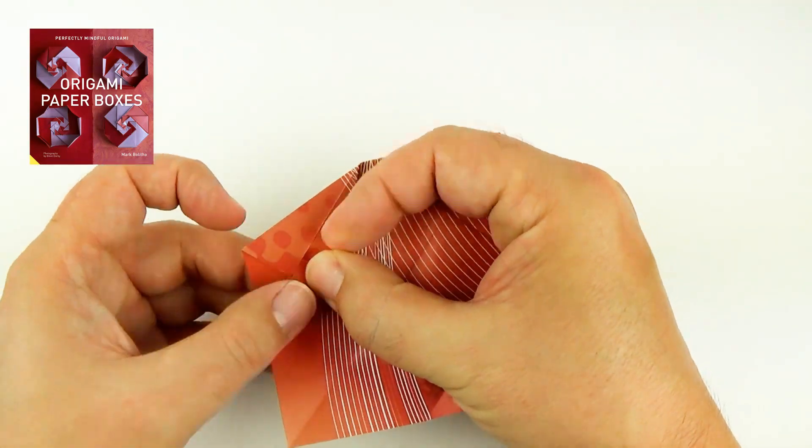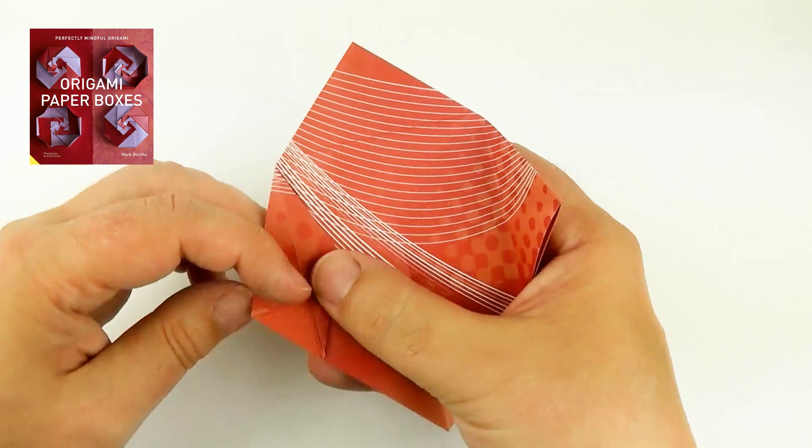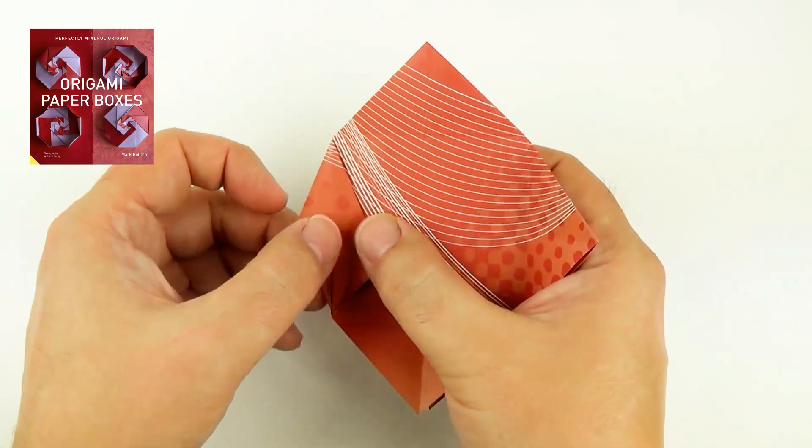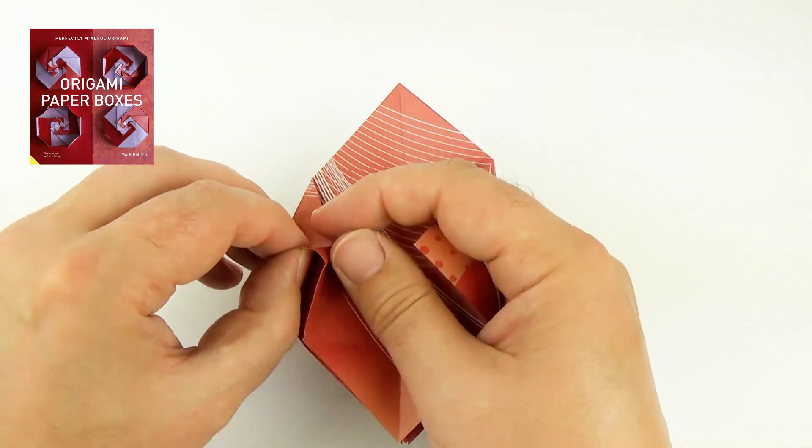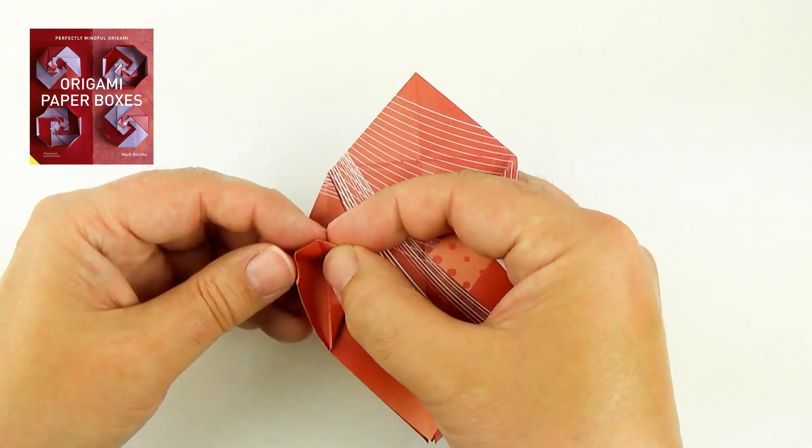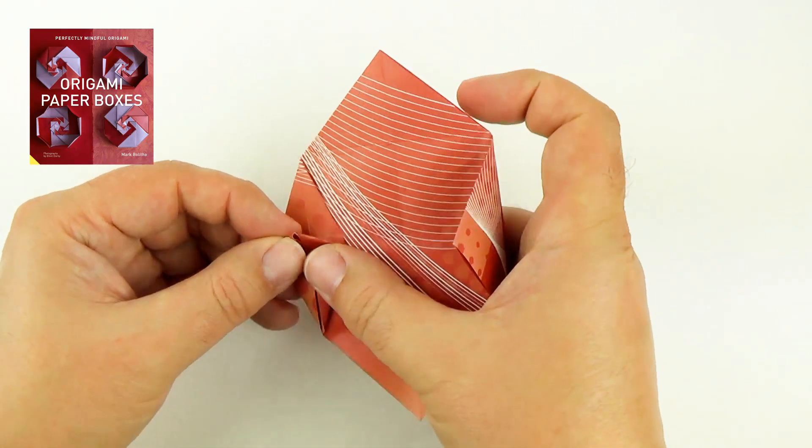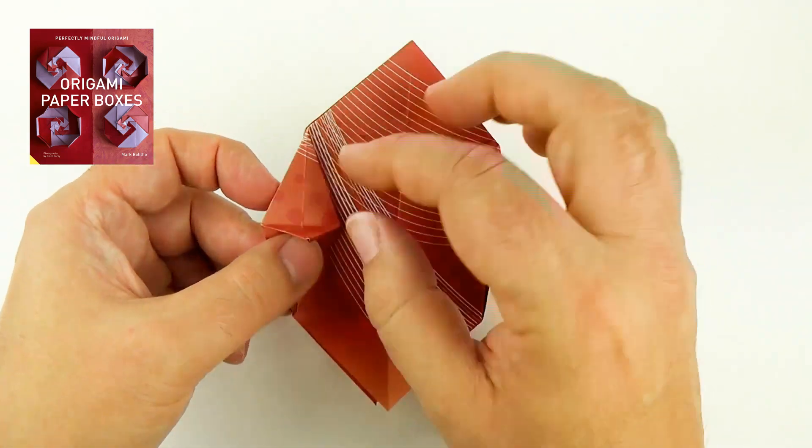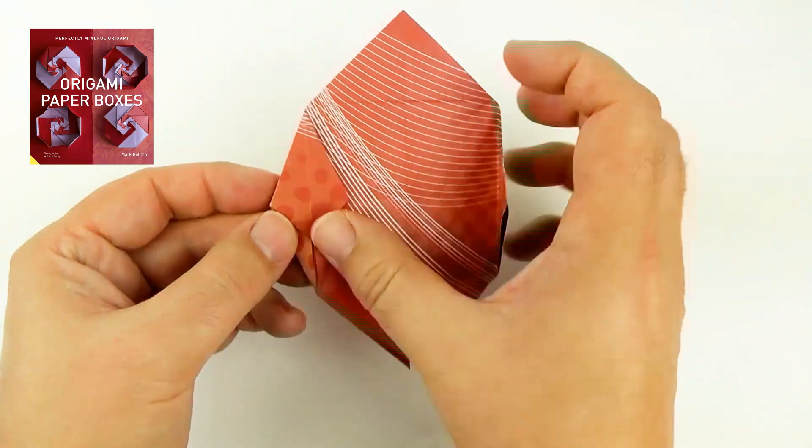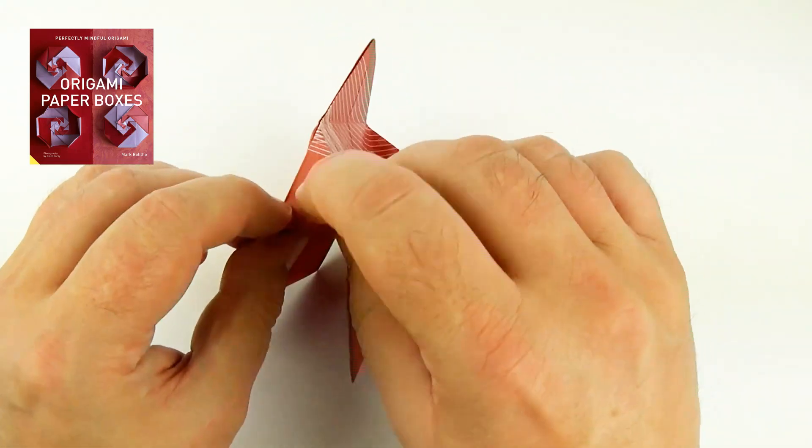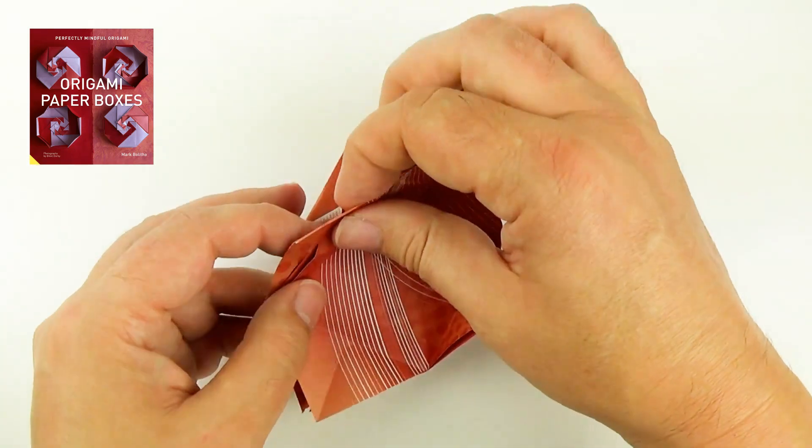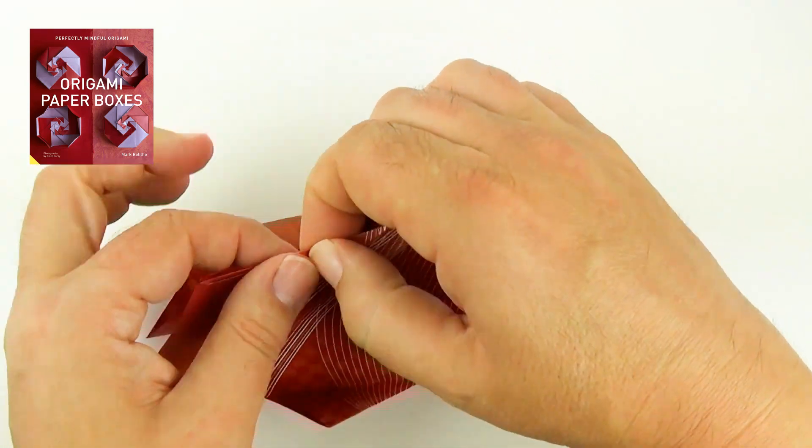And squash. Fold the edge in, and the same on the other side. Open up. And we fold the edge in. And back in. And we'll open up the point. Fold that inside and squash that. And fold the point behind.